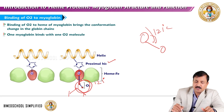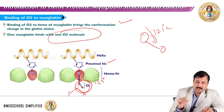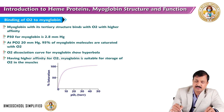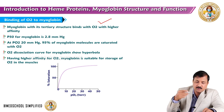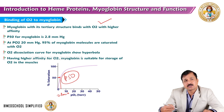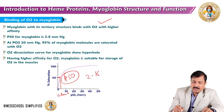Binding of oxygen to the heme of myoglobin brings a conformational change in the globin chain, and one myoglobin molecule will bind with only one oxygen molecule. Myoglobin, with its tertiary structure, binds oxygen with higher affinity. Looking at the oxygen dissociation curve, when 50% of myoglobin is oxygenated, the partial pressure of oxygen drops to around 2.8 mmHg, which is the P50. P50 is the partial pressure at which 50% of myoglobin is oxygenated.